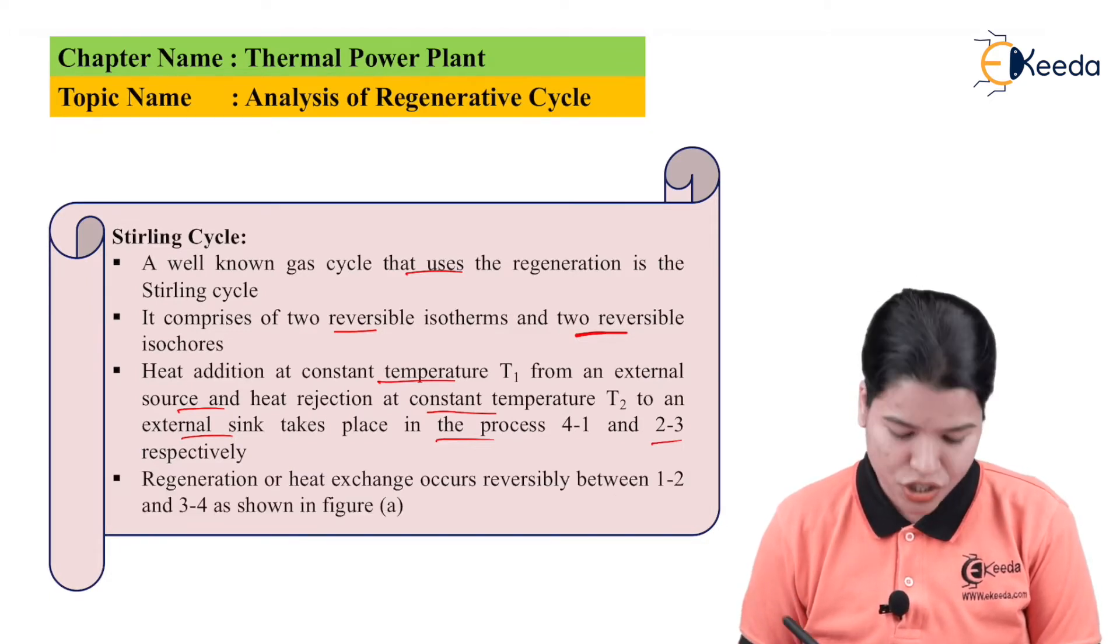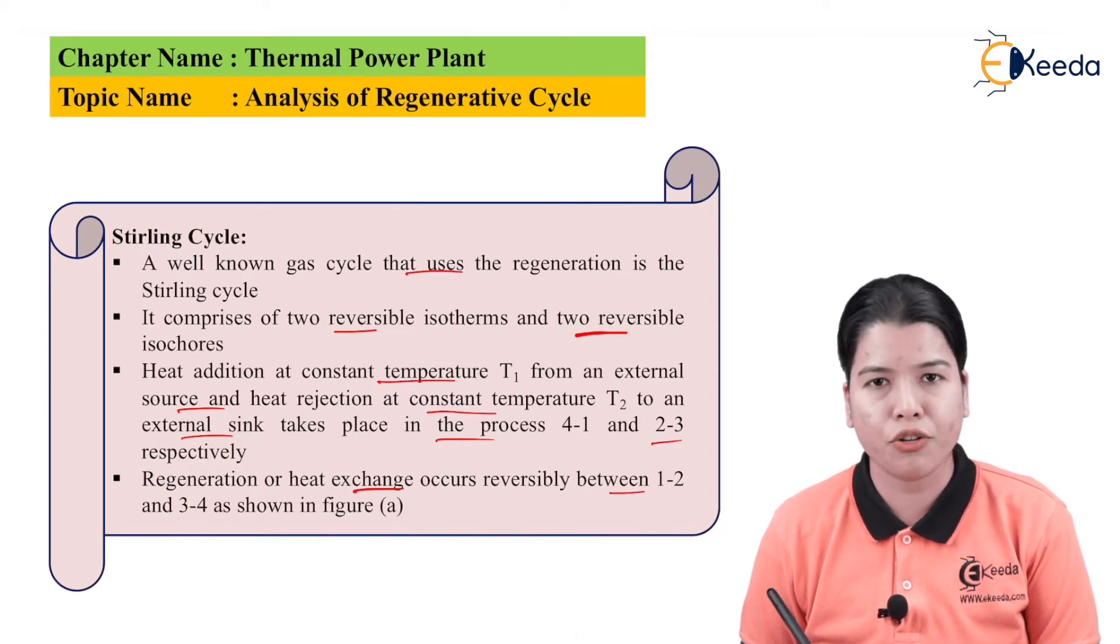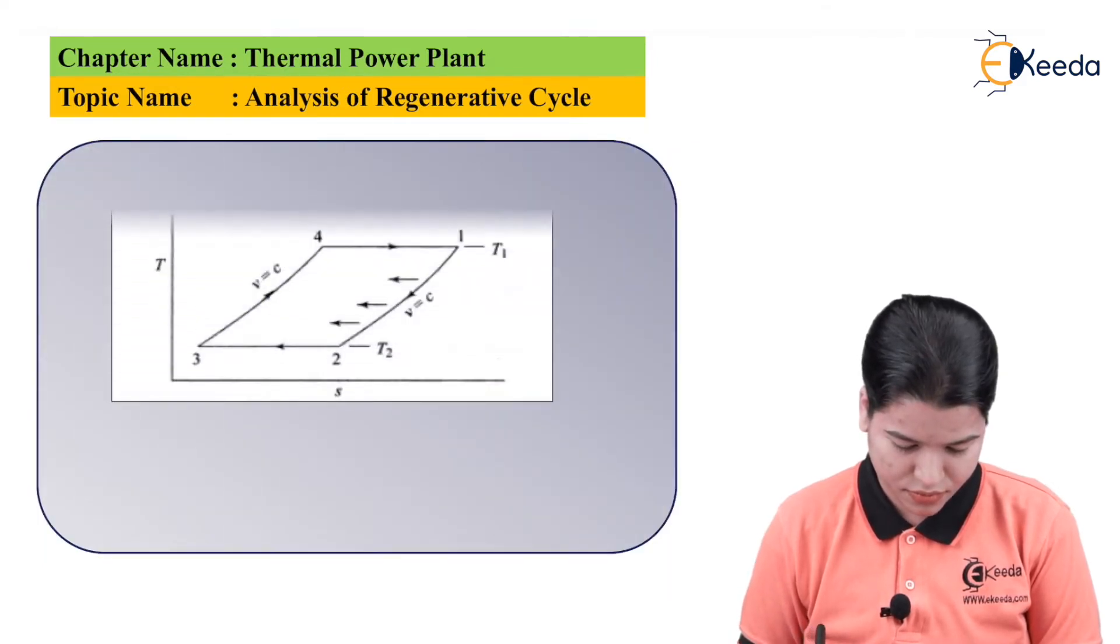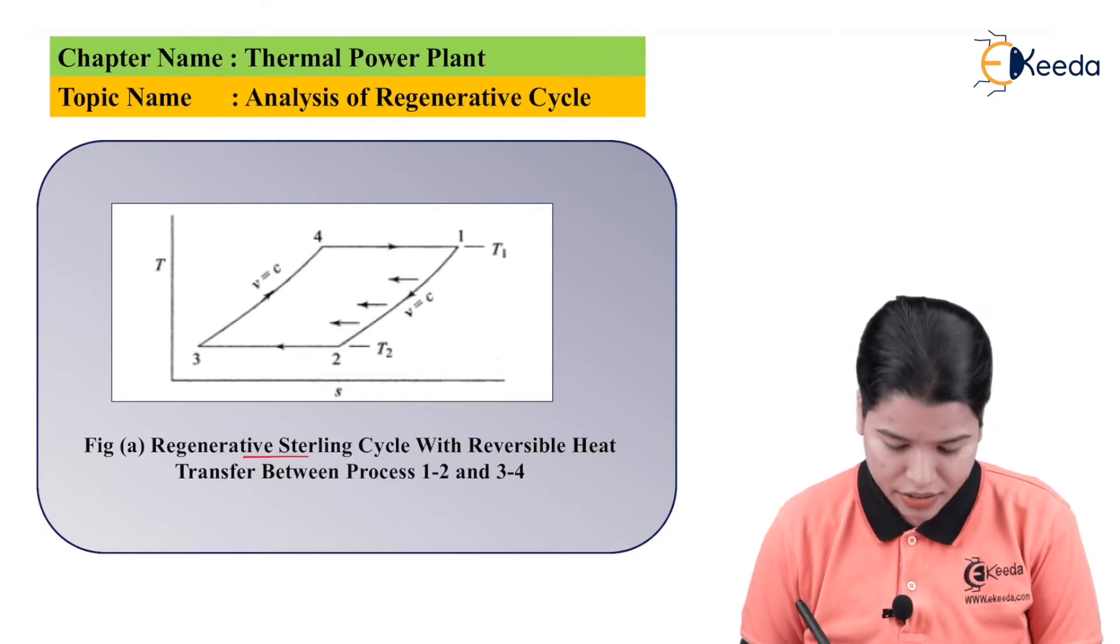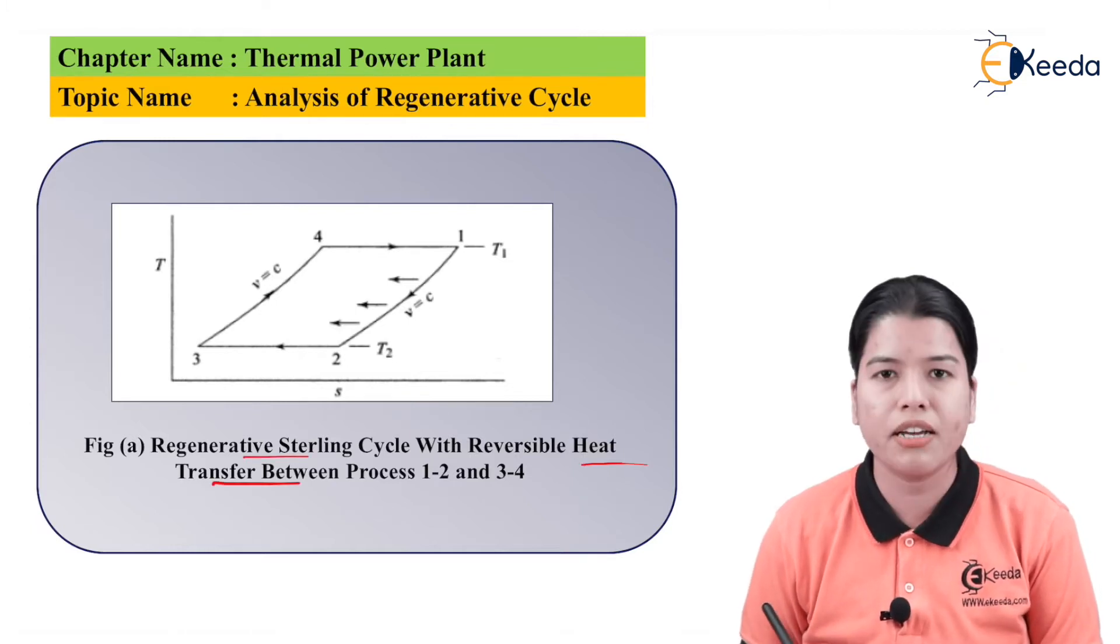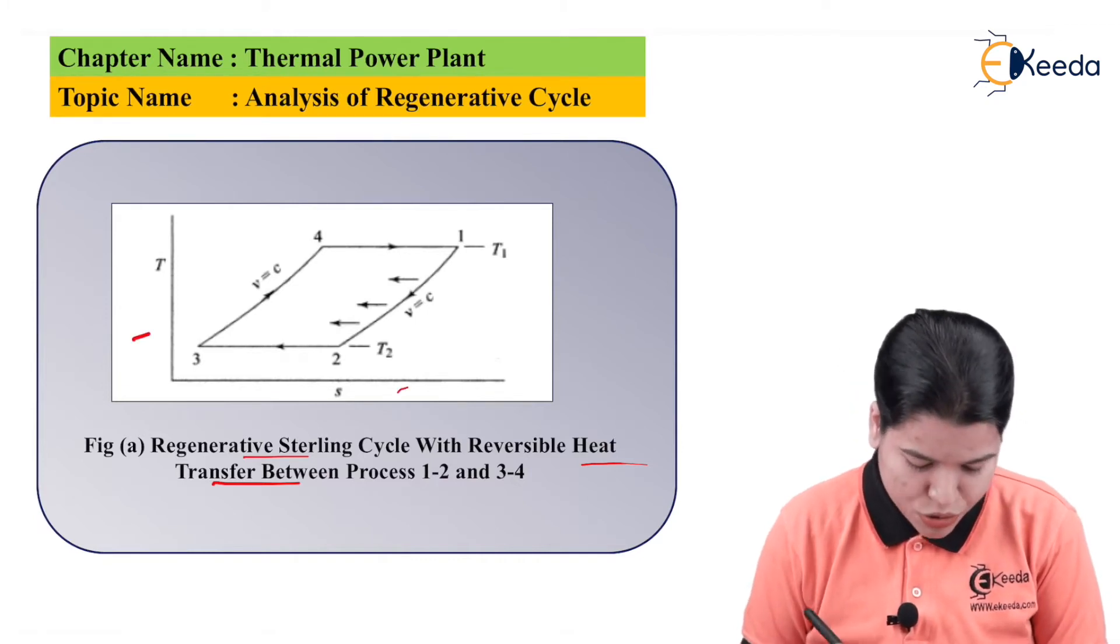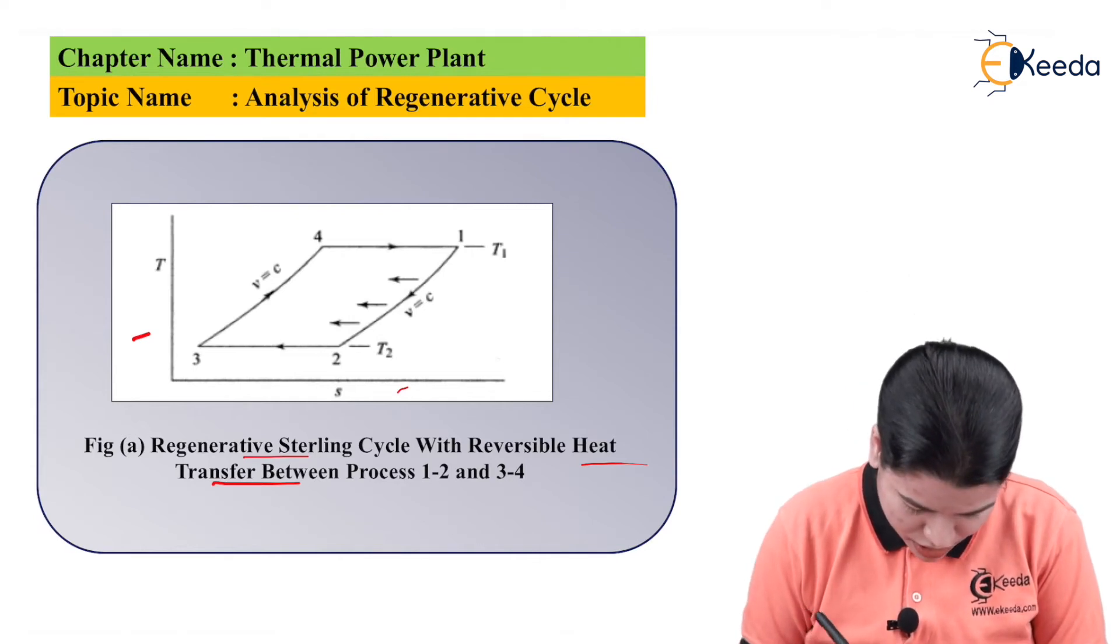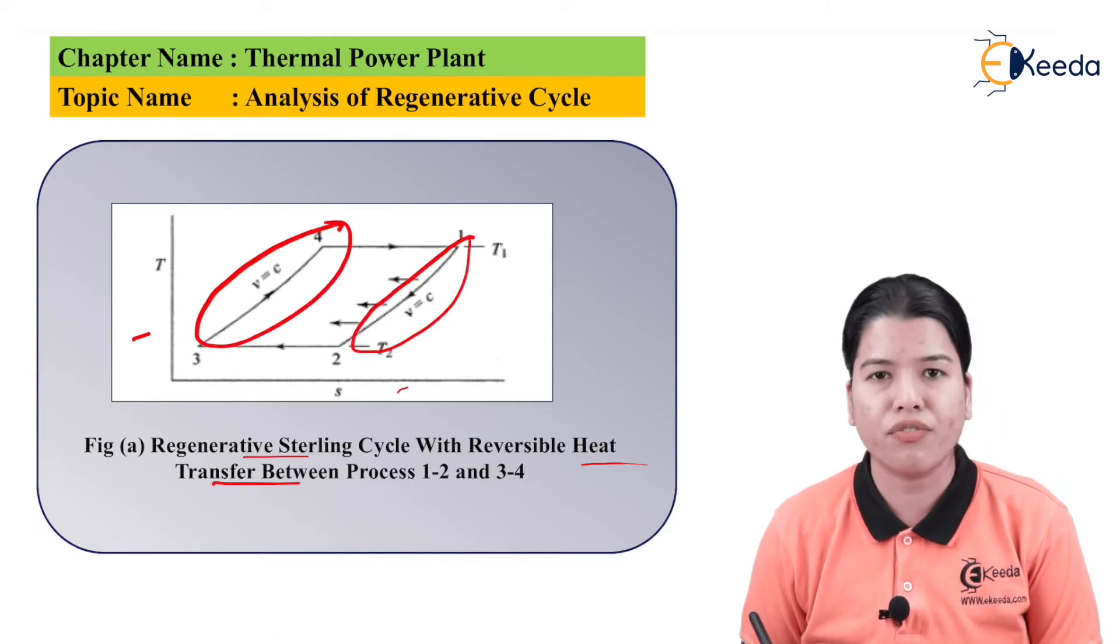The regeneration or heat exchange occurs reversibly between 1 to 2 and 3 to 4 as shown in figure. The figure shows regenerative Stirling cycle with the reversible heat transfer between the process 1 to 2 and 3 to 4. If we see here it is a graph which shows the T-2s, then here between 1 to 2 and 3 to 4 there is a transfer of heat.